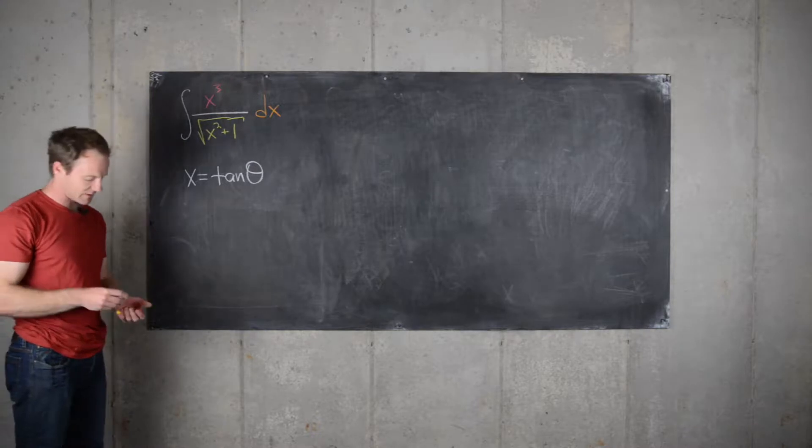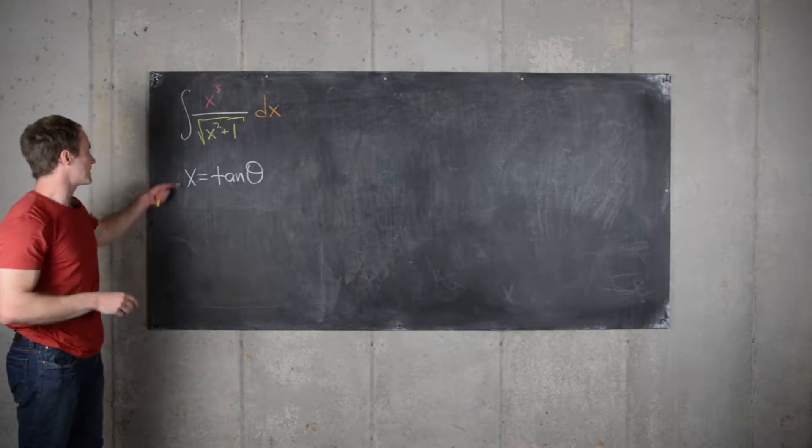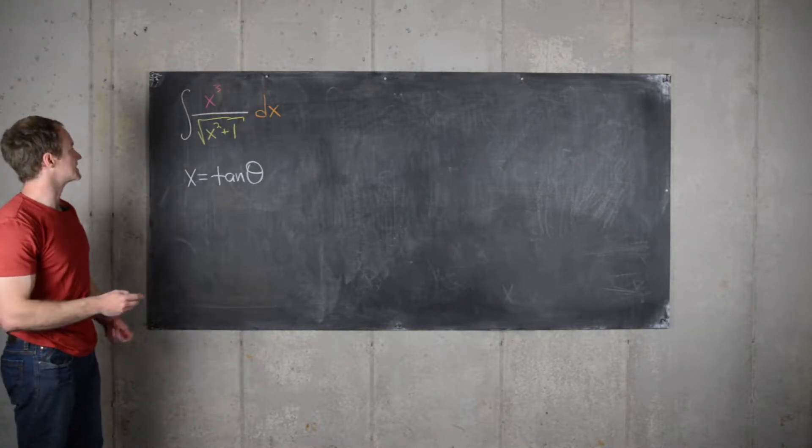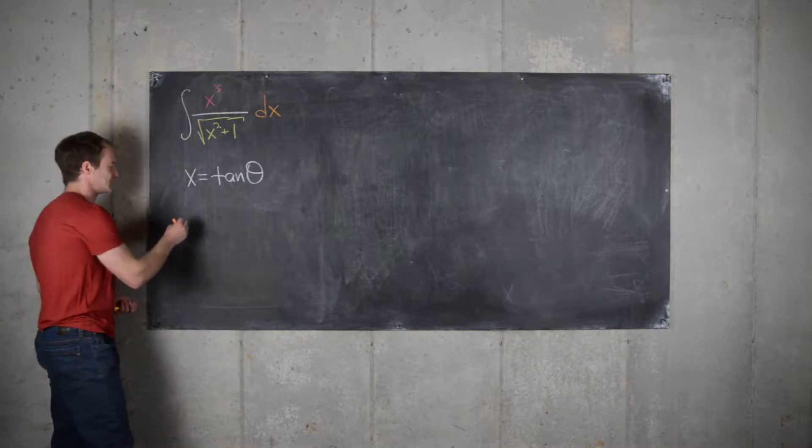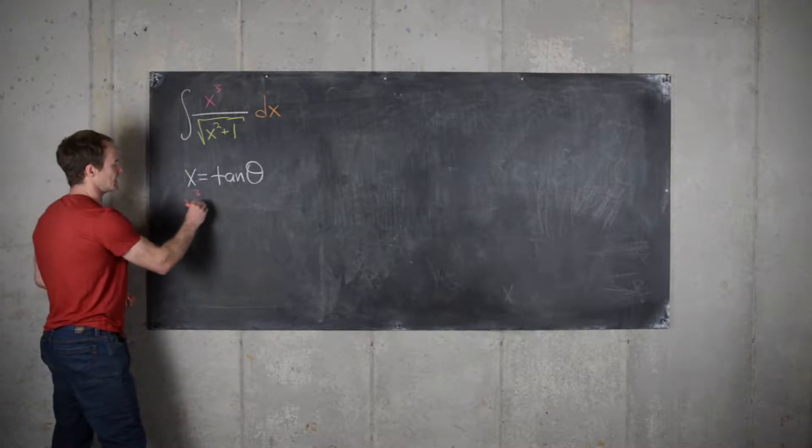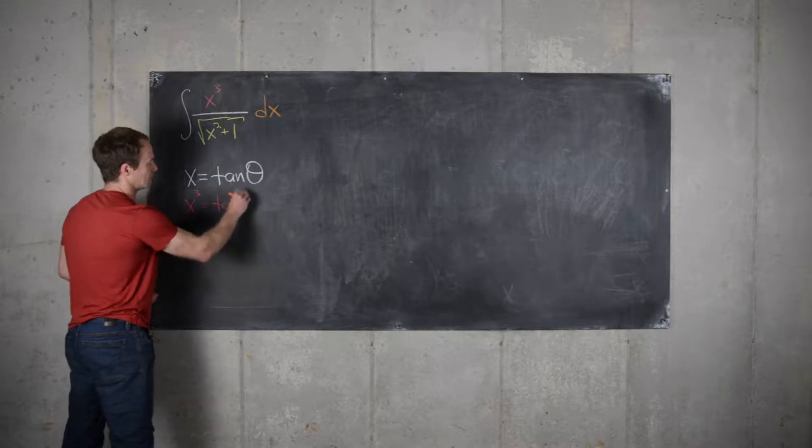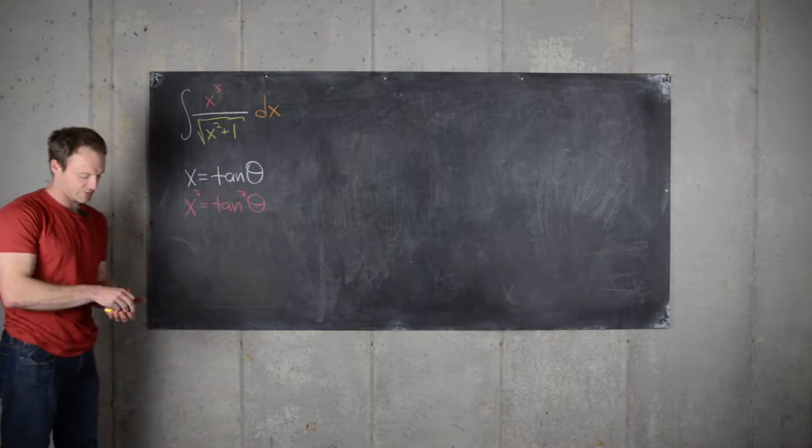Now let's populate the parts of the integral with this x equals tangent theta and see what happens. So the first thing that we can see is that x cubed equals tangent cubed theta. That part's easy.